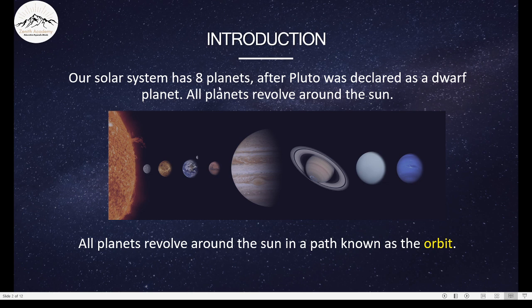Our solar system has 8 planets. But earlier, it had 9 planets. The 9th planet was Pluto. But Pluto was declared as a dwarf planet. And who declared it so? The International Astronomical Unit, IAU, declared it as a dwarf planet. This is our main star, the sun. And these are the planets that revolve around the sun.